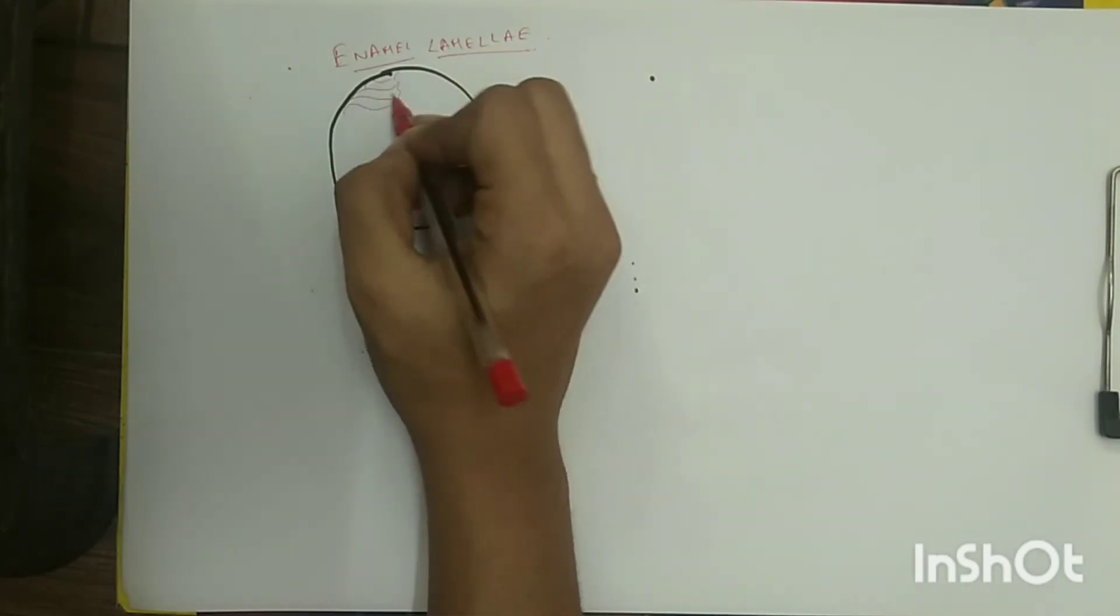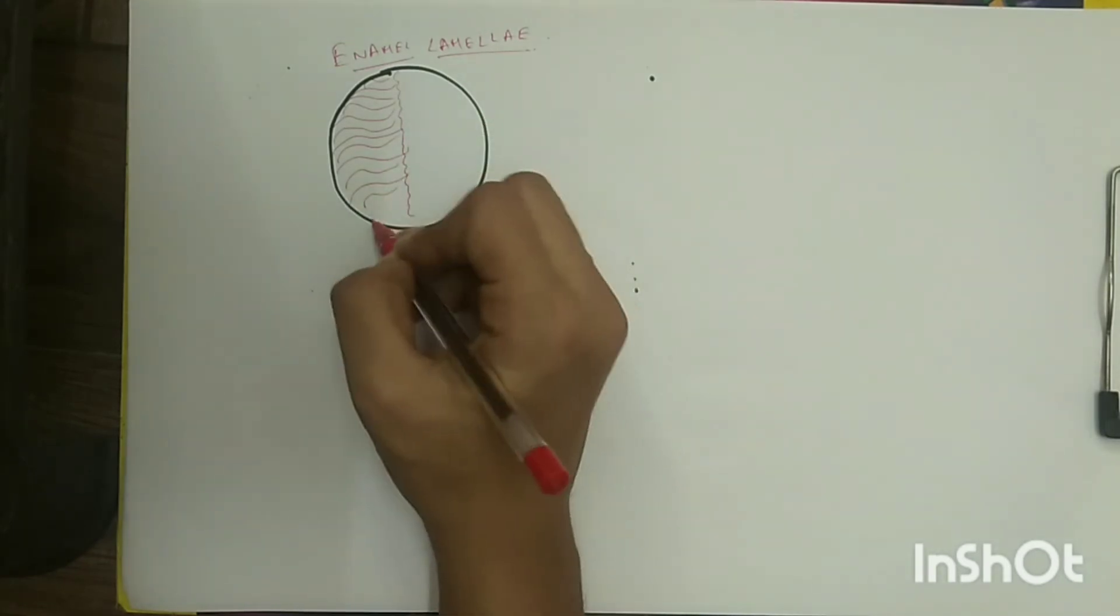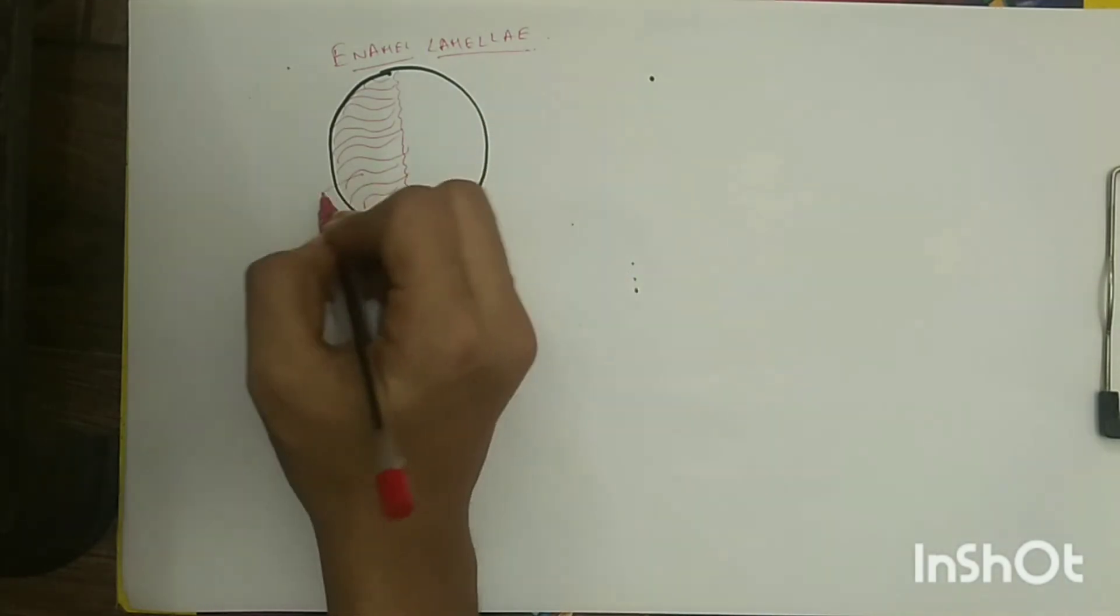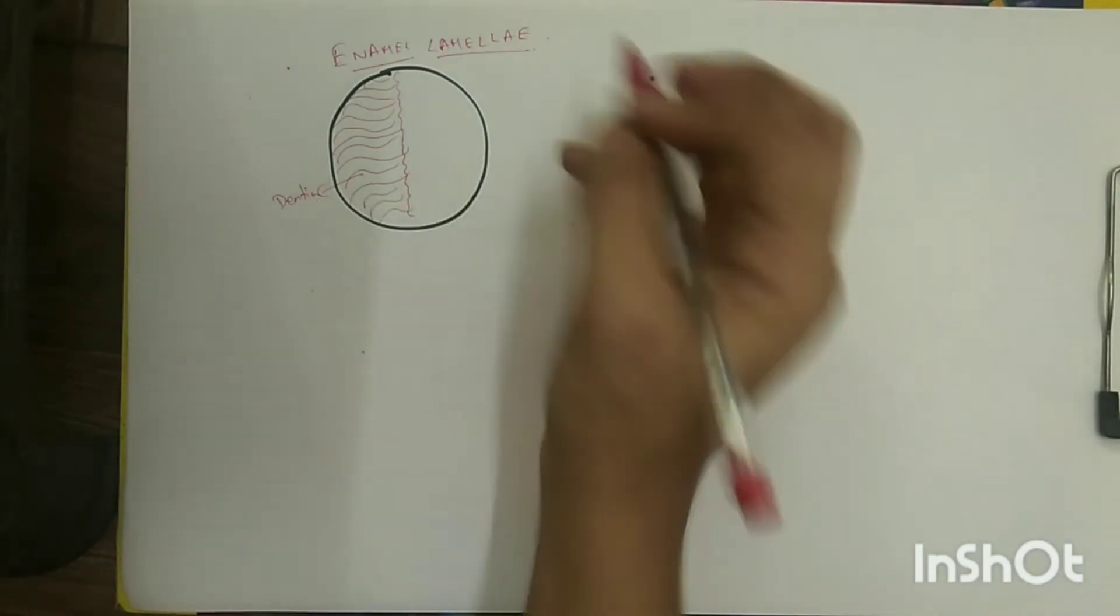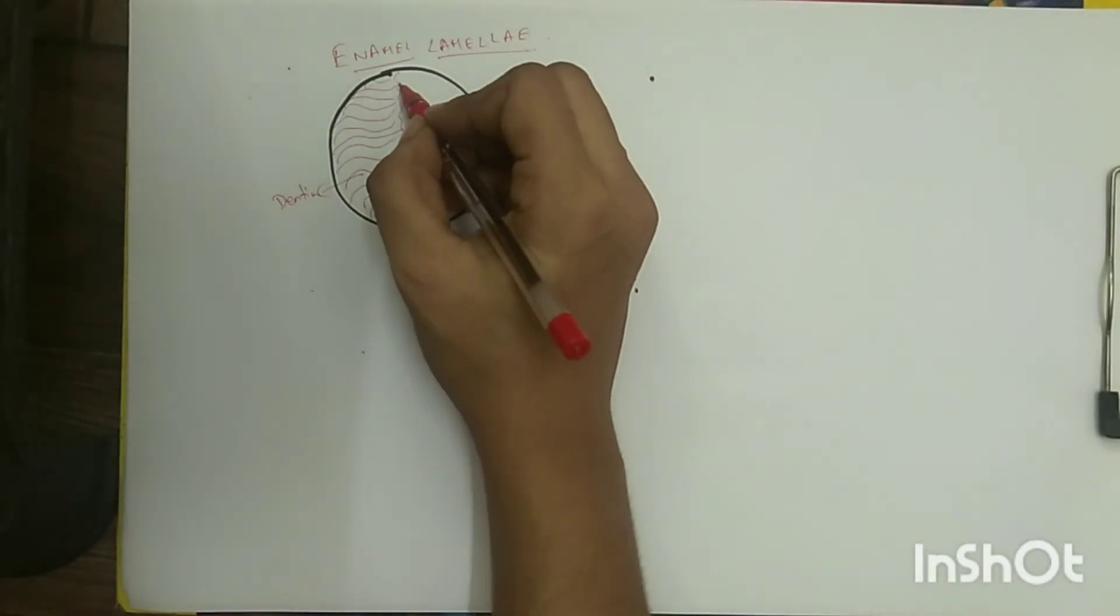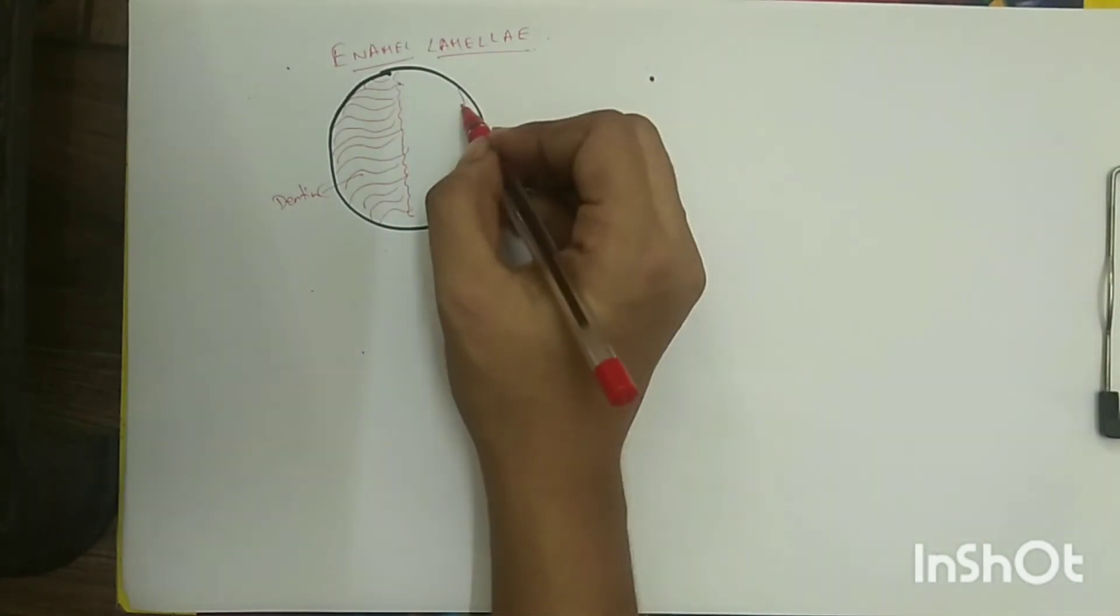Enamel lamellae are formed due to severe disturbance causing cracks in the newly formed enamel and are filled with organic matter. It is suggested that enamel lamellae can be a weak site providing a pathway for bacteria to enter and cause caries.